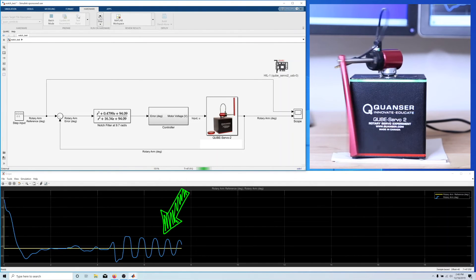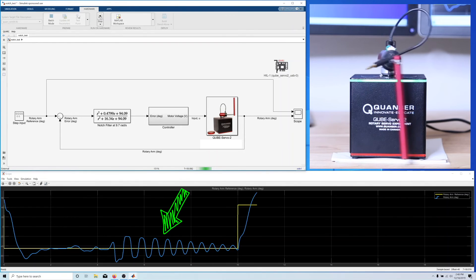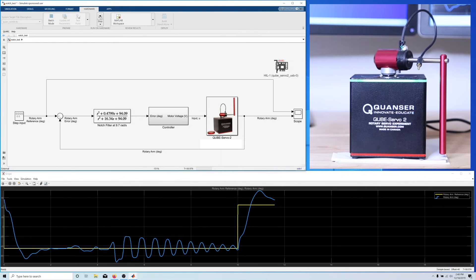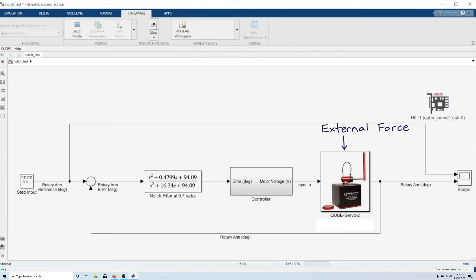The controller itself doesn't add energy into the pendulum. Great. But that also means it can't remove energy. If an external force causes the pendulum to oscillate, our controller won't be able to damp out that motion. And it makes sense if we think about the problem. Let's say an external force causes the pendulum to start oscillating at 9.7 radians per second. The pendulum then acts on the rotary arm and causes it to oscillate back and forth at the same frequency. This angle is fed back and compared to the reference, which means that the error term has a 9.7 radians per second oscillation component, which is then removed by the notch filter. And so the controller doesn't see it, and it doesn't react.